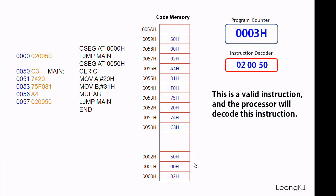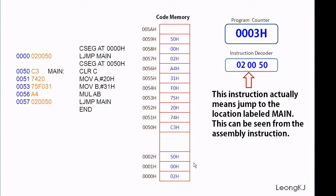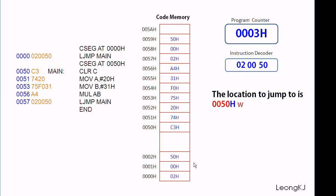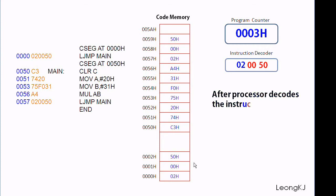This is a valid instruction, and the processor will decode this instruction. This instruction actually means jump to the location labeled main. This can be seen from the assembly instruction. The location to jump to is 0050, which is actually coded in the machine instruction 02 00 00 50. After the processor decodes the instruction, it changes the PC to 0050.